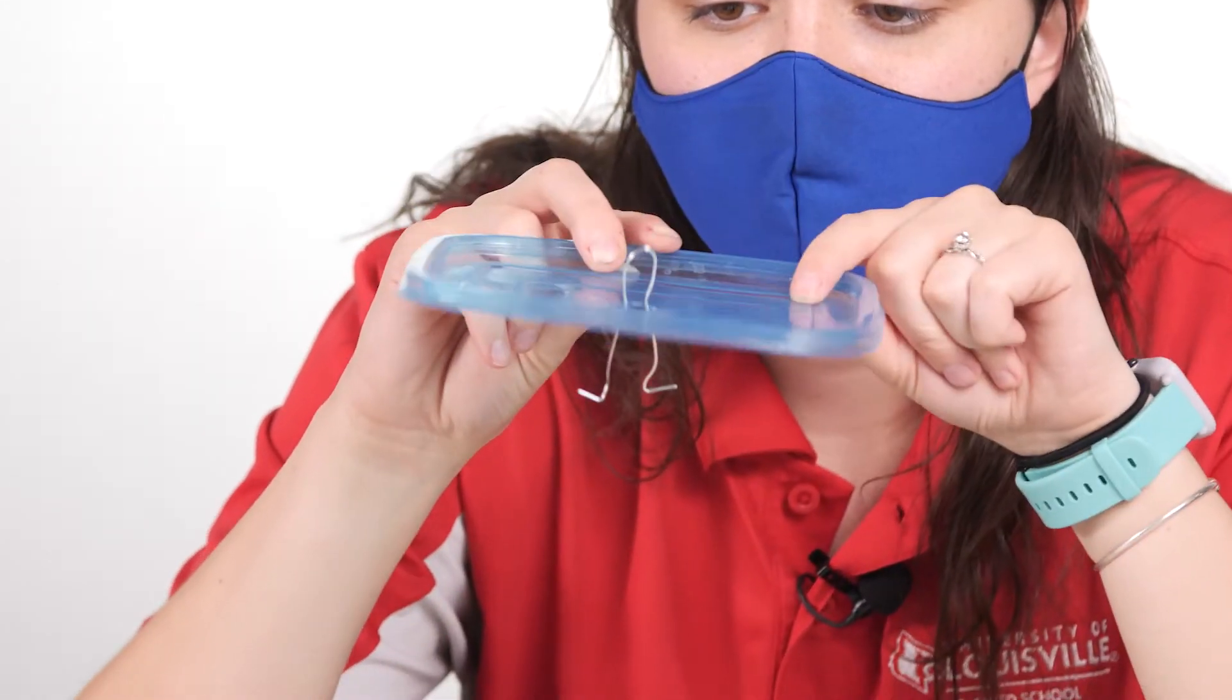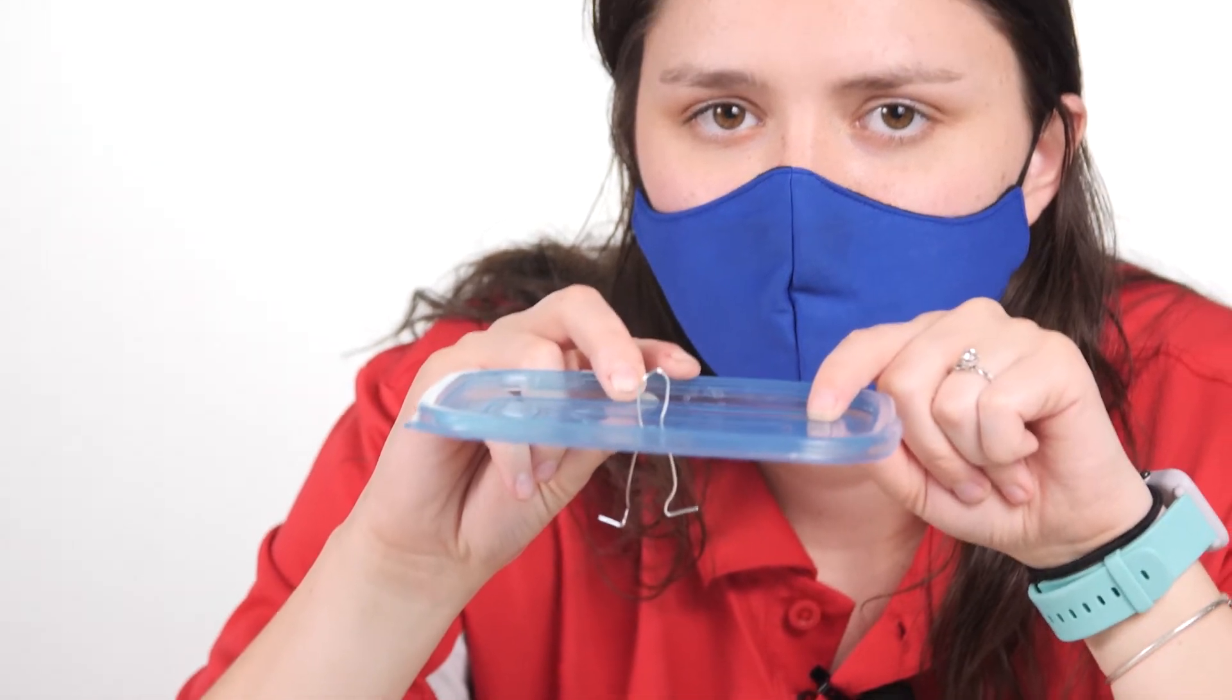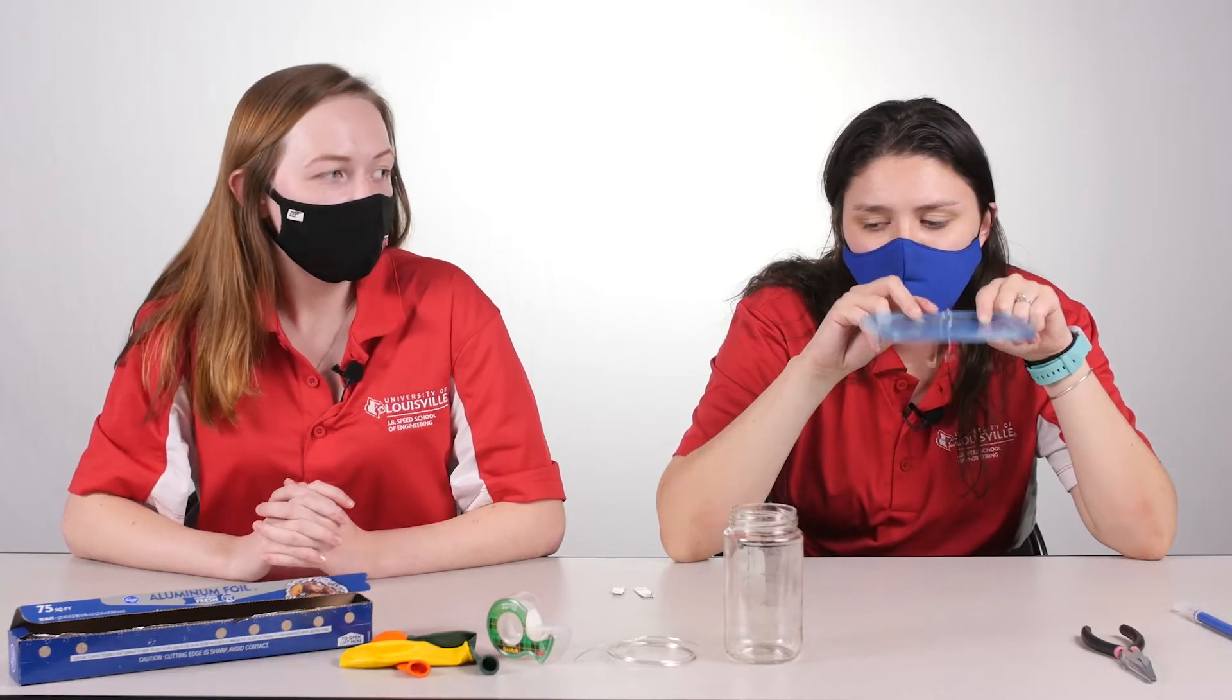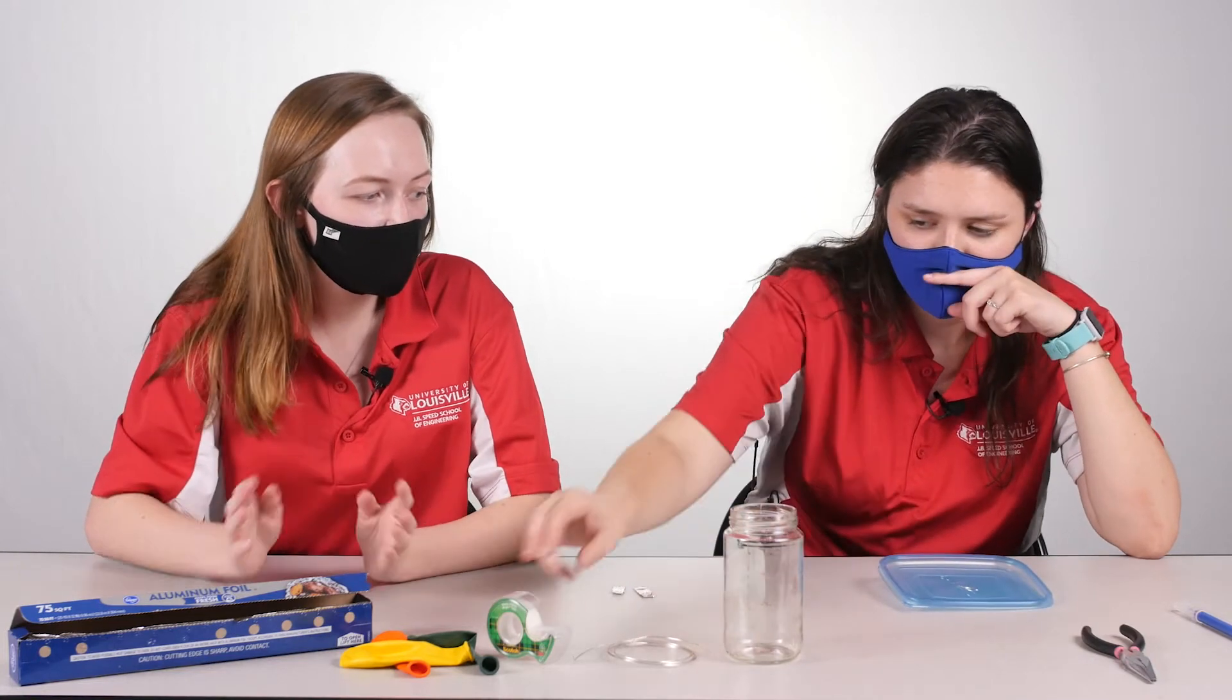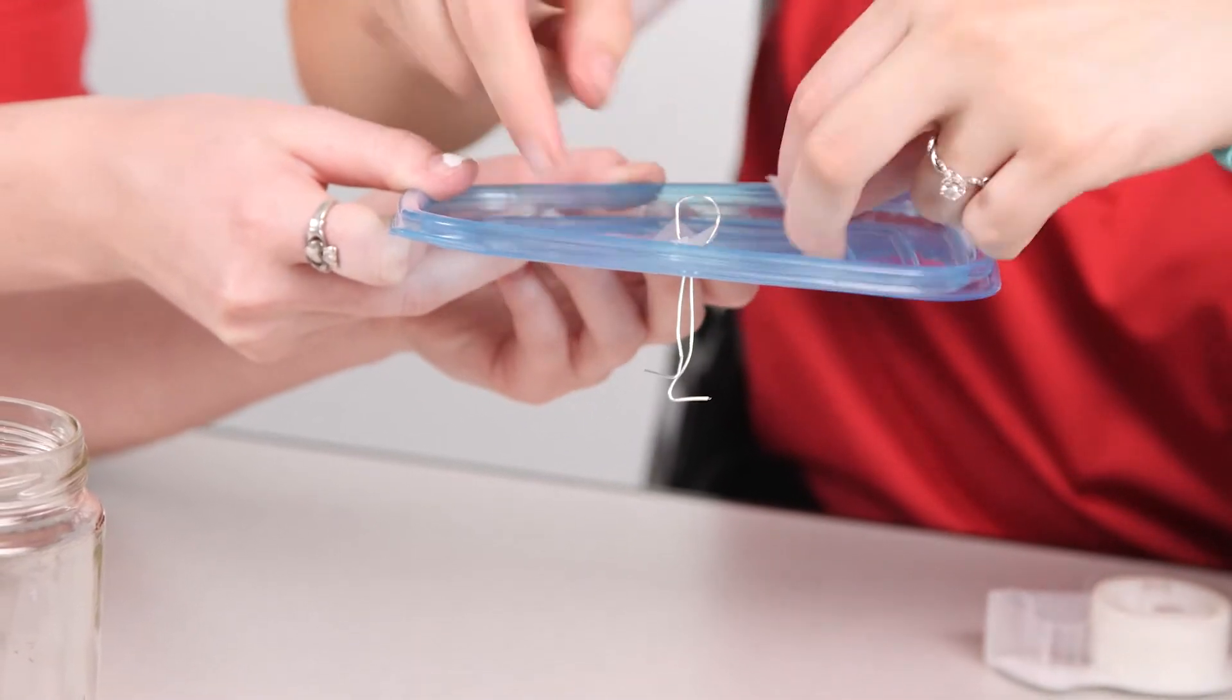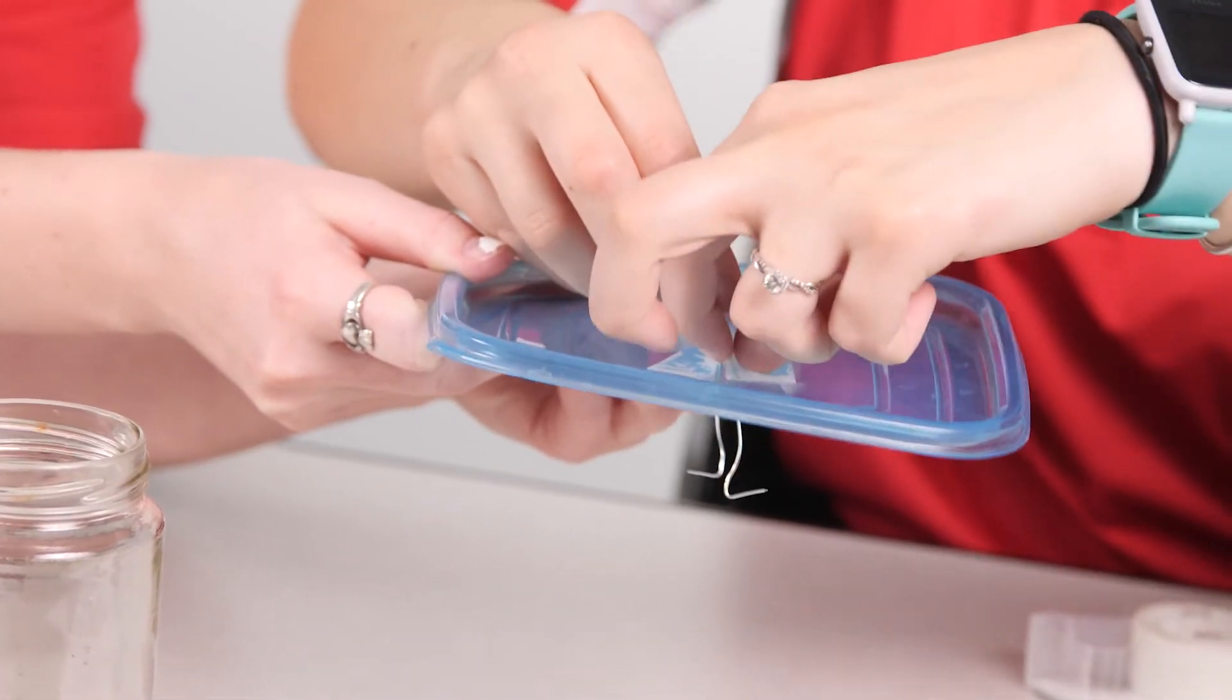You want to make the slit just wide enough that you can fit the wire through, but if you accidentally make it wider, that's where our tape comes in. We're going to tape the hook in place so that it can help stay up and not fall into the glass.